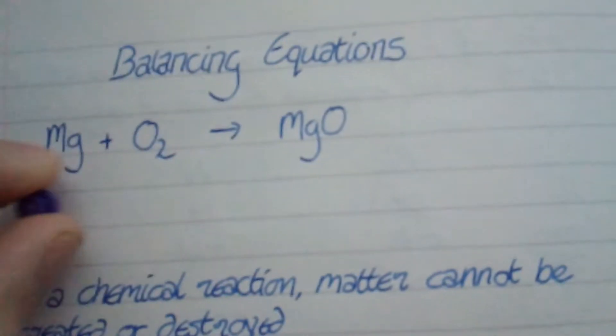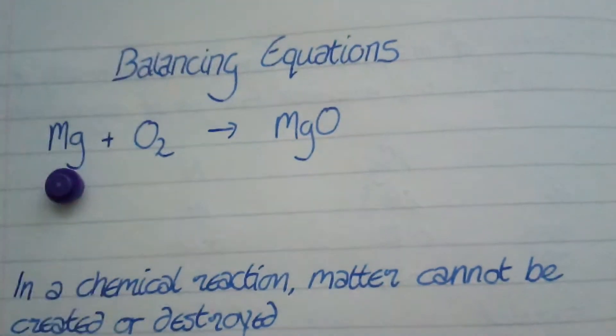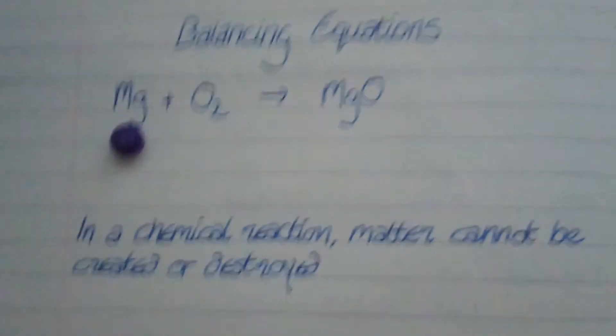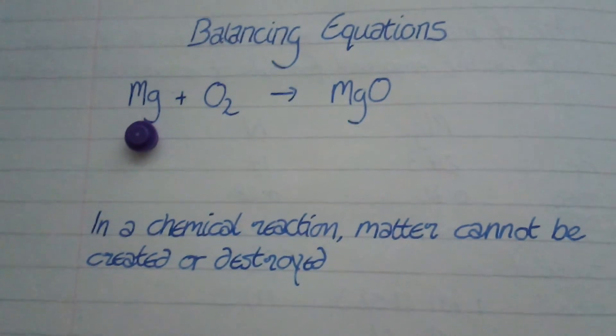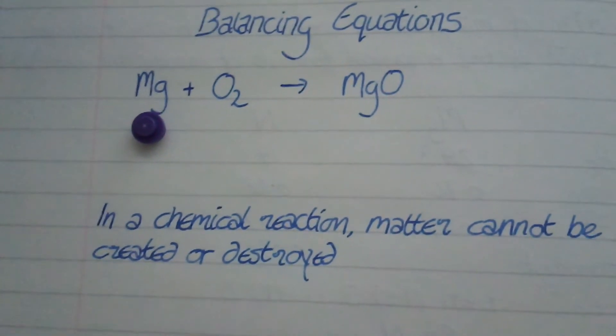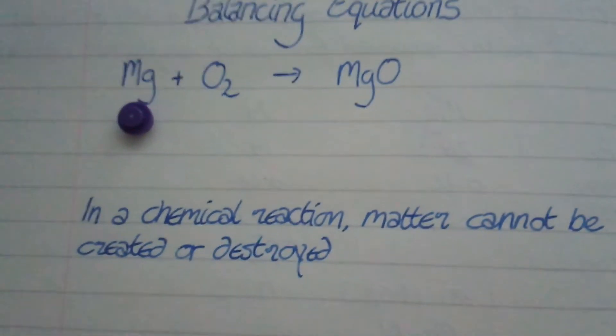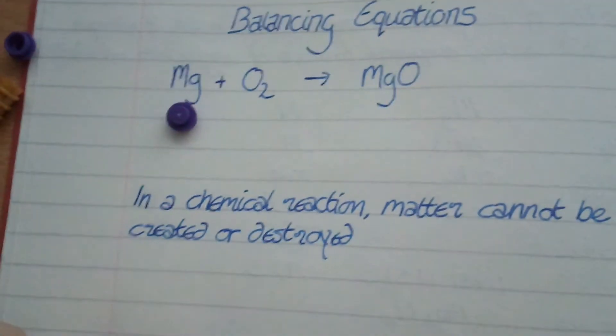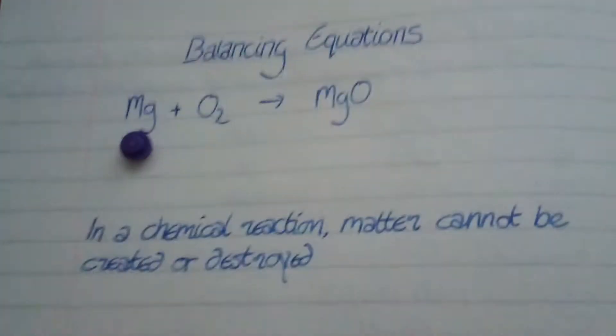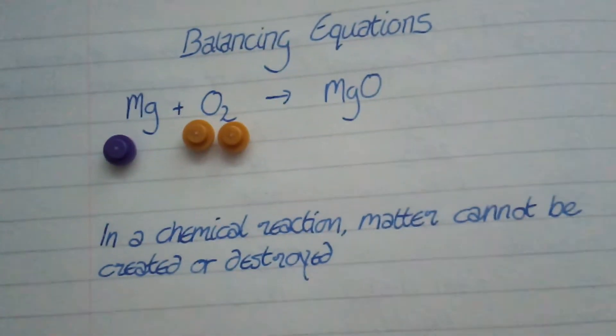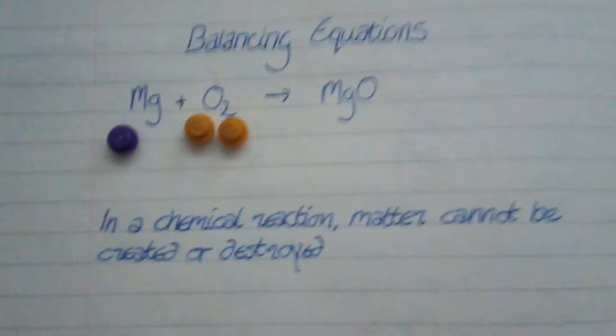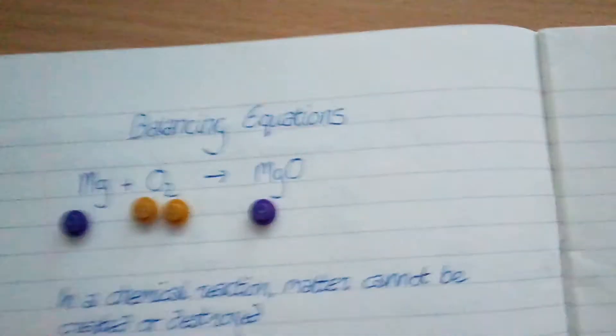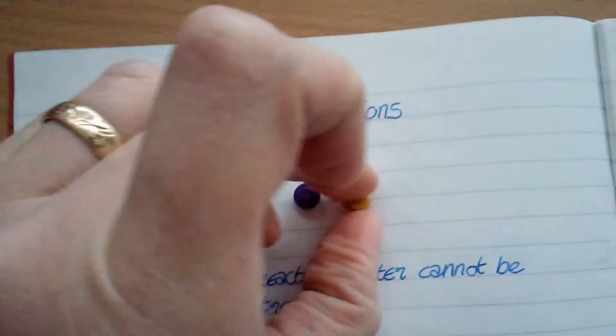So what we're going to do is I'm going to make magnesium purple and we've got one magnesium. Oxygen is going to be gold and we've got O2, which is two atoms of oxygen. So what we need are two separate studs. Hang on a second. OK, so now I've got two oxygens for O2 and that makes magnesium oxide. So I add in one magnesium and one oxygen.